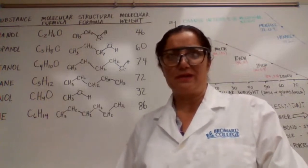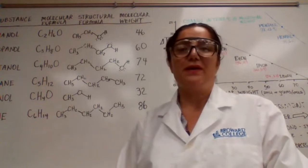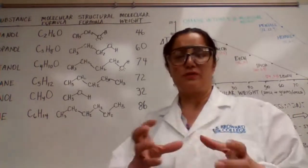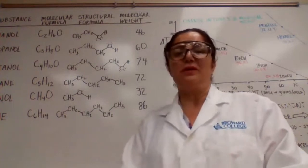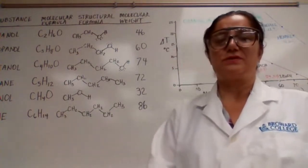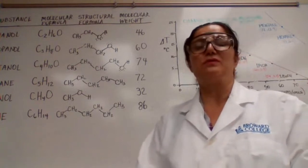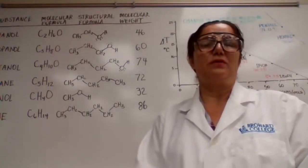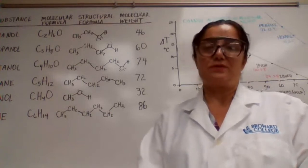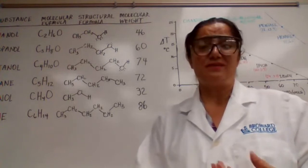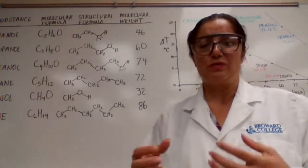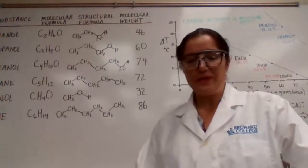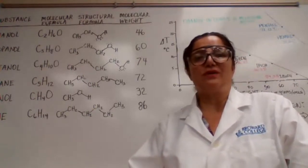Any ionic compound has a very high melting point and very high boiling point — for example, NaCl has an 800 degrees Celsius melting point. In order to melt a solid compound, we have to overcome the forces holding the ions together. The stronger the intermolecular forces, the higher the boiling point, higher the melting point, and lower the rate of evaporation. The weaker the intermolecular force, the lower the melting point, lower the boiling point, and faster the rate of evaporation.